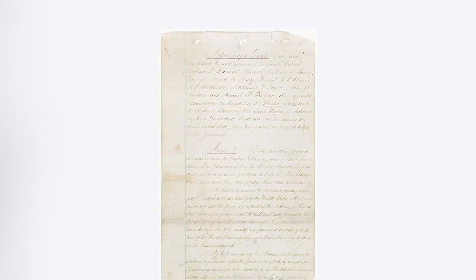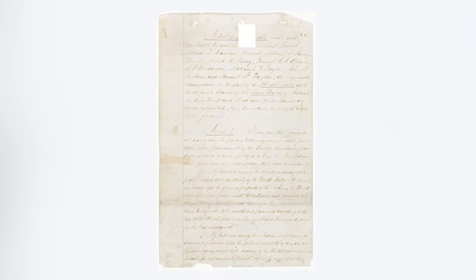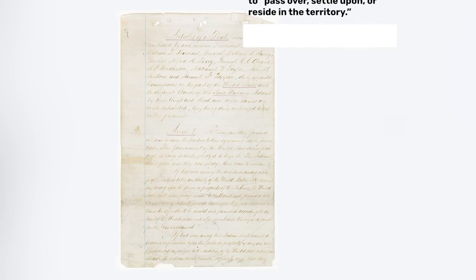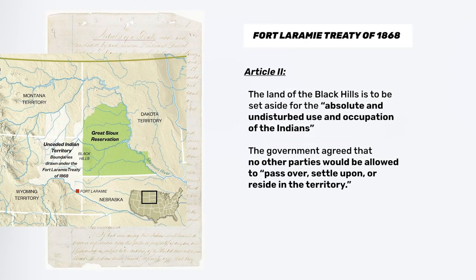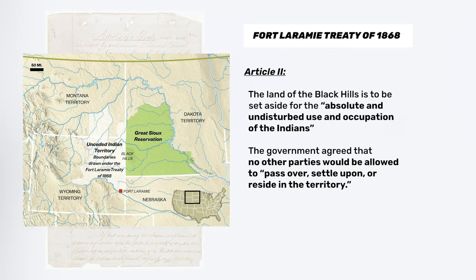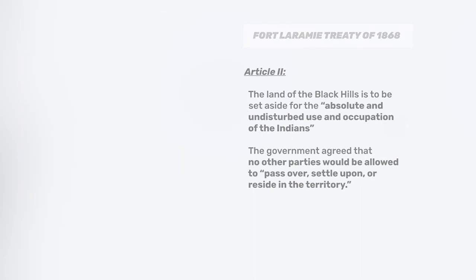Under pressure to secure peace in the plains, the U.S. government gave a treaty with the Sioux a second go-round in 1868, which determined that the Sioux would permanently settle in the Black Hills, creating the Great Sioux Reservation that exists to this day. The agreement stated that the Black Hills would belong to the Sioux for as long as the grass shall grow and the rivers will flow.